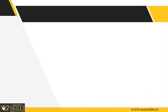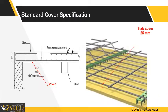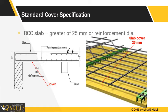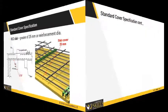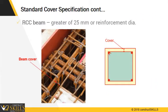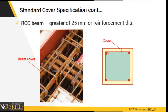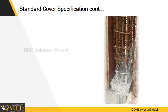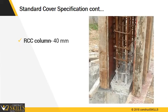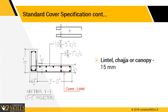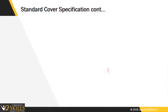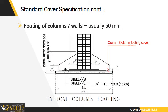The standard specifications for providing cover are as follows. For RCC slab it should be the greater of 25 mm or the diameter of reinforcement. Same is for beam — greater of 25 mm or the diameter of reinforcement. For column, it is 40 mm. For lintel, whether shed or canopy, 15 mm. For column and wall footing, 50 mm.